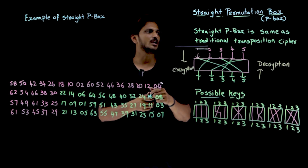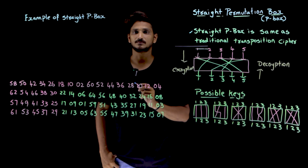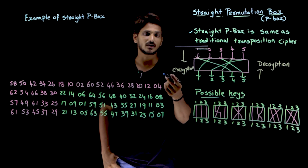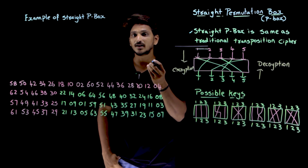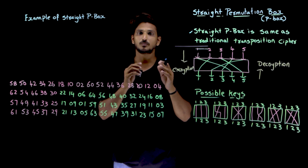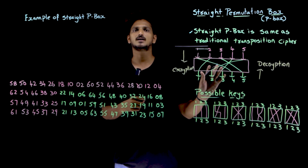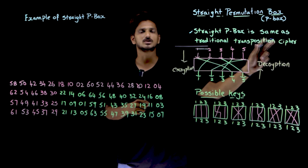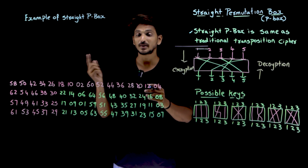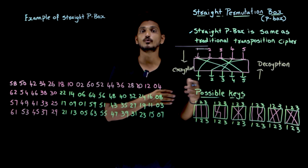Now, what is meant by Stride Permutation Box? The Stride Permutation Box is the same as a traditional transposition cipher. In our previous classes, we clearly discussed some basic transposition cipher techniques. Transposition means permutation of characters — changing the character positions. But here, we are going to do this on bits. In our previous examples, we did transposition on characters, but in modern block ciphers, we work with bits.